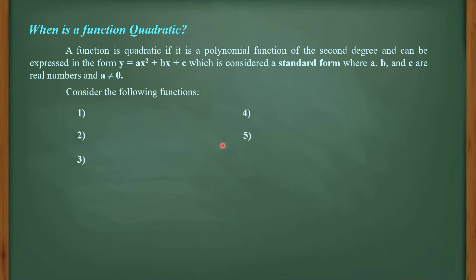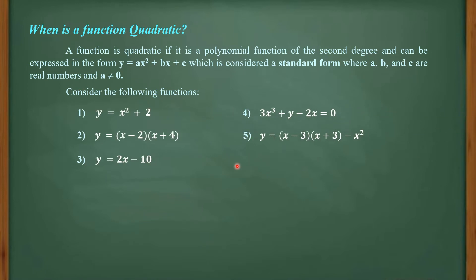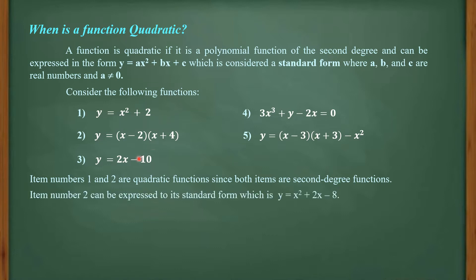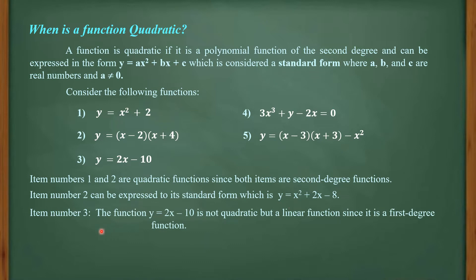Consider the following functions — I have 5 examples here. Items number 1 and 2 are quadratic functions since both are second-degree functions. Number 1 is obvious, and for number 2, when you apply the FOIL method, you get an x² term, so it can be expressed in standard form as y = x² + 2x − 8. For item number 3, the function y = 2x − 10 is not quadratic but a linear function since the highest exponent is 1.